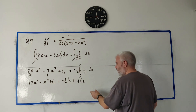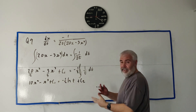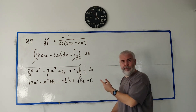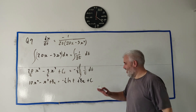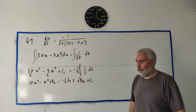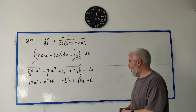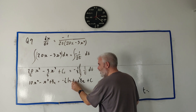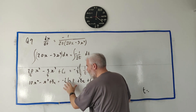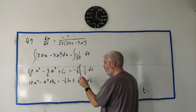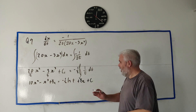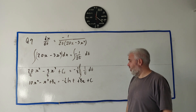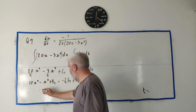Combining the two constants C₁ and C₂ into a single constant C, we get: 10x² − x³ = −(1/2) ln t + C. They want t on its own, but we first need to find C. Rearranging: C = 10x² − x³ + (1/2) ln t, and we can substitute the known values x = 1/2 and t = 1/10.